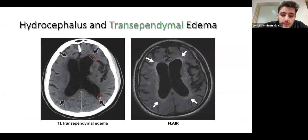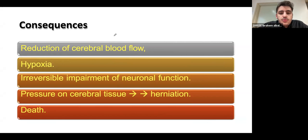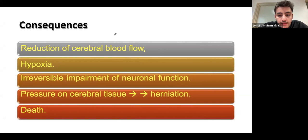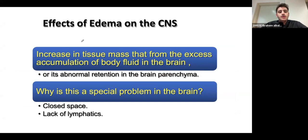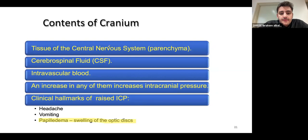When you have brain edema, the brain swells. The cranial vault is made up of blood vessels, CSF, and the brain itself — it's a limited space. Any increase in pressure will cause herniation, which can result in death along with hypoxia of neural tissue causing loss of function. Because the brain is in a closed space without lymphatics to drain it, you need to manage increased intracranial pressure immediately.